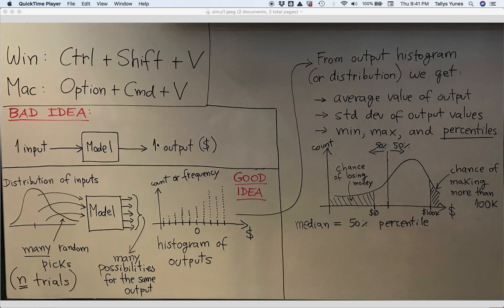So instead of doing one in, one out, what we really want to do is many in, many out. And that's the idea. Even though we know the input is a little random, we normally have some idea for how random it is.